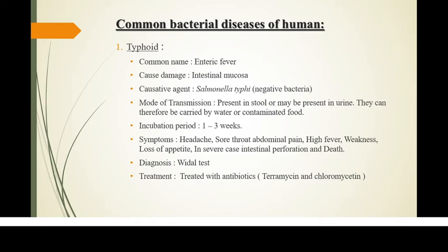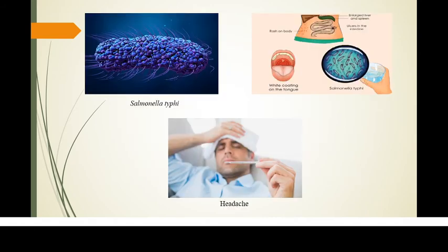The primary symptoms of typhoid are headache, sore throat, abdominal pain, high fever, weakness, and loss of appetite. In severe cases, intestinal perforation and even death may occur. Diagnosis is done by the Widal test. Treatment is with antibiotics — terramycin and chloramphenicol. The first image shows Salmonella typhi bacteria, and the second image shows rashes on the body and ulcers in the intestine.